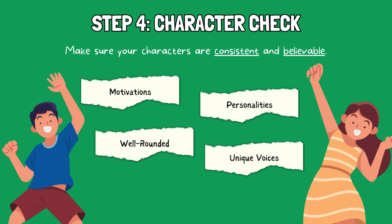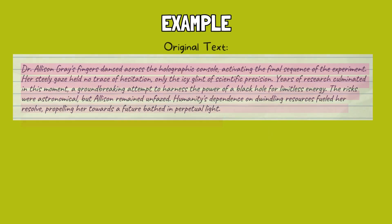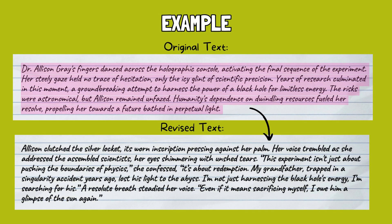Step 4: Character Check. Zone in on your characters. Make sure your characters are consistent and believable. Do their actions and motivations make sense? Do they have unique voices and personalities? Revise your characters to ensure they're well-rounded and relatable. For example, in the initial draft of a science fiction novel, the protagonist, Dr. Alison Gray, is portrayed as a highly skilled scientist with little emotional depth. Her actions and decisions appear inconsistent, and her motivations for undertaking a dangerous experiment are unclear.